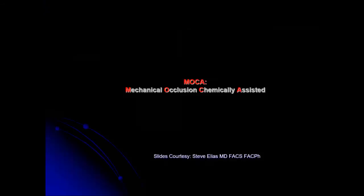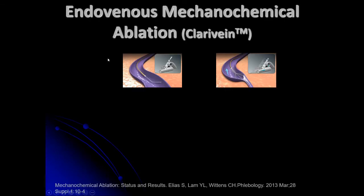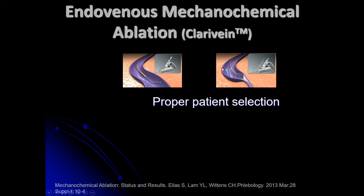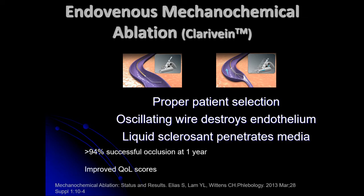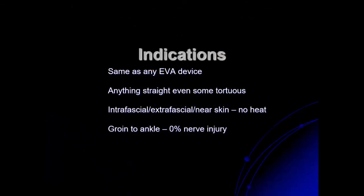MOCA — mechanical occlusion chemically assisted — uses a small wire inserted into the vein that rotates rapidly, denuding the endothelium, while injecting liquid sclerosant. Reports, mostly from the US and Netherlands, claim greater than 94% success rate at one year in terms of occlusion. Indications are the same as for any other endovenous device. Even tortuous veins can be treated because you can steer the wire. You can go extrafascially — very near the skin — because there is no heat, meaning no risk of nerve or burn injury. Advantages include ability to treat below the knee safely, treat extrafascial veins, and treat C5 and C6 patients down to the malleoli.